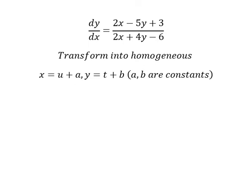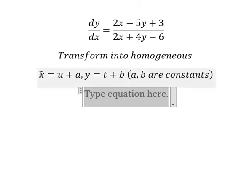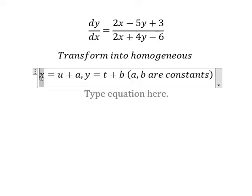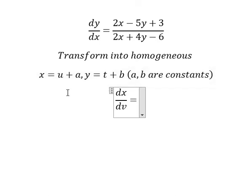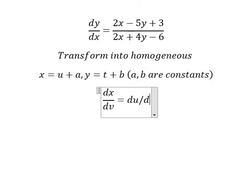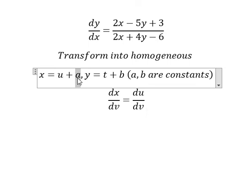And we know that a and b are constants. So in this situation, we need to do first the differentiation for both sides. First, the differential of x: we have dx over dv equal to du over dv. Because this is about the constant, so you get zero.